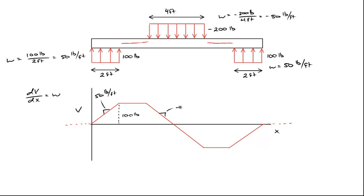In the final region, the slope is negative 50 pounds per foot. We're down to negative 100 pounds at that point, and we came down a total distance of 200 pounds.